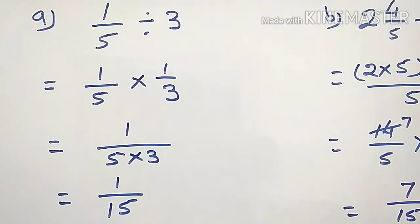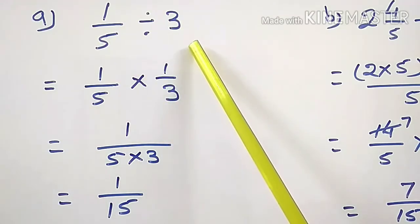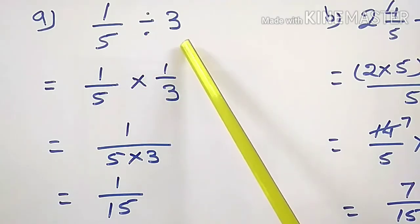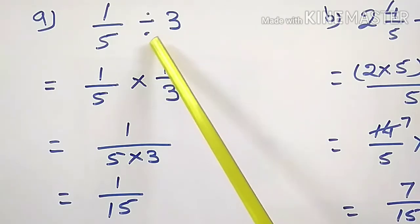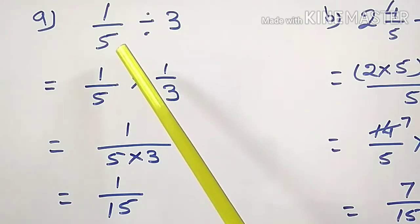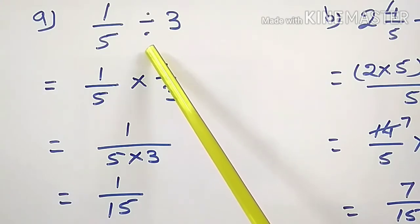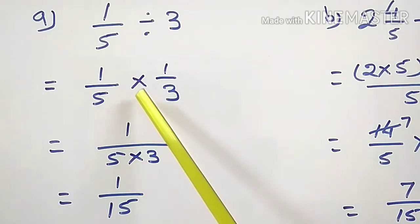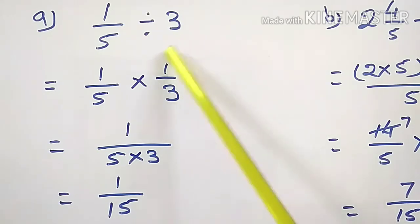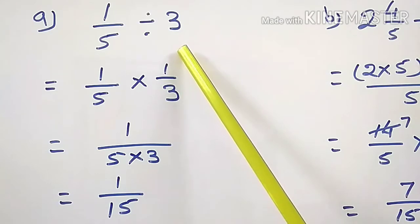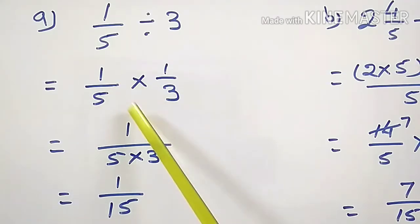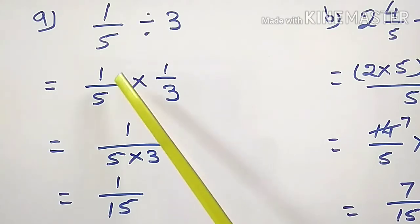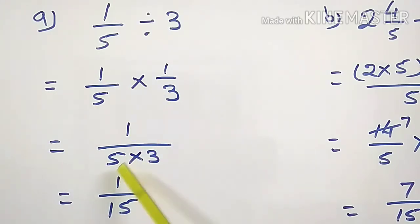Question A: 1/5 divided by 3. To divide the fraction by any whole number or fraction, we first change the sign of division into multiplication. So 1/5, the fraction is written as it is, sign of division is converted into multiplication, and then we take reciprocal of the second fraction. Second fraction is 3/1, so its reciprocal is 1/3. No common factor in numerator and denominator, so write the product of denominator in the denominator. 5 threes are 15. 1/15 is the answer.